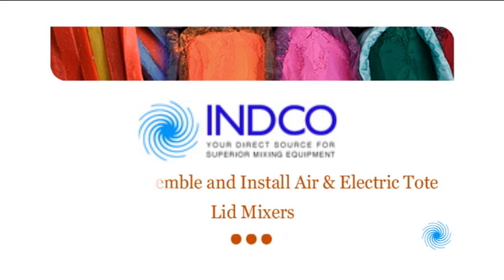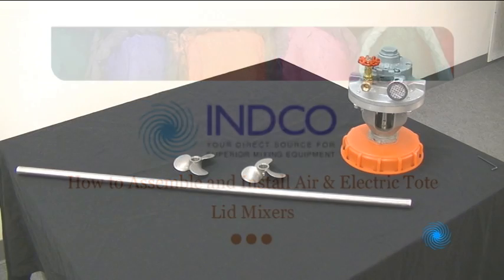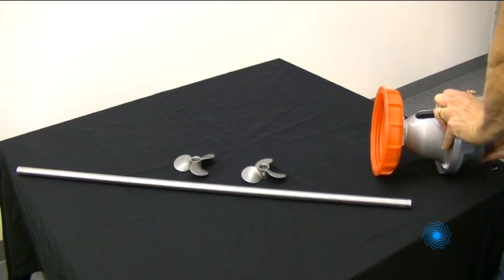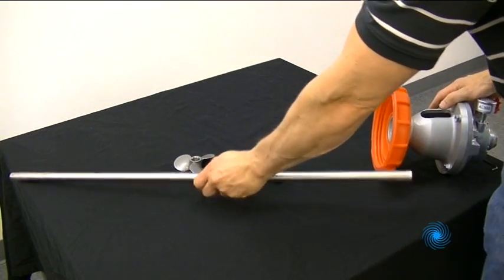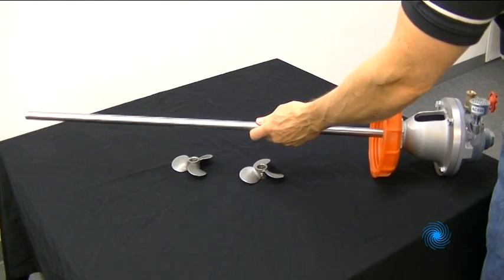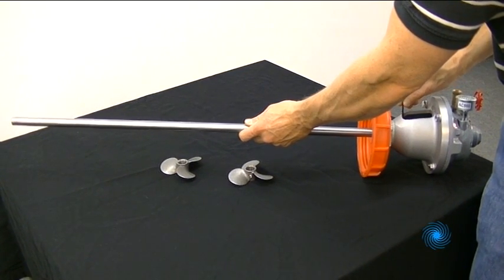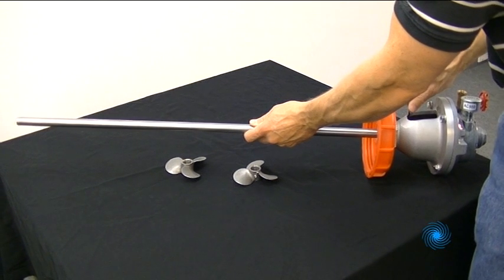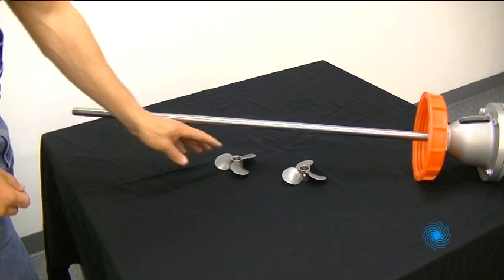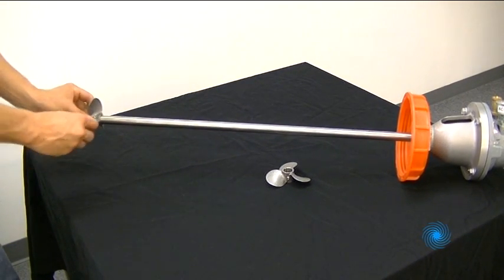Inco presents assembly and installation of IBC tote lid mixers. Your pneumatic tote lid mixer ships with the shaft coupler pre-installed on the motor. Mixer shaft assembly is completed by inserting it into the coupler and tightening two set screws. The two 316 stainless steel mixing propellers are also secured to the shaft with set screws.